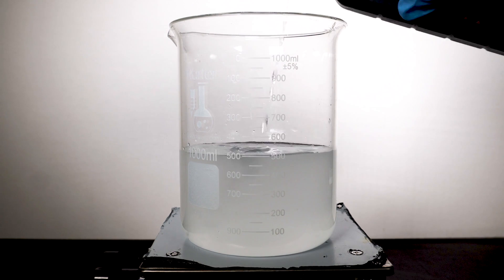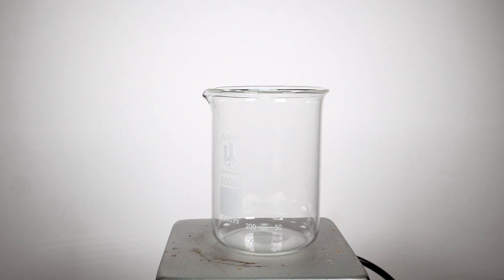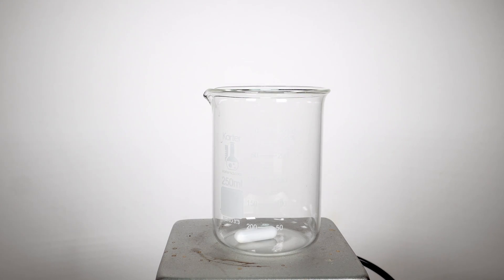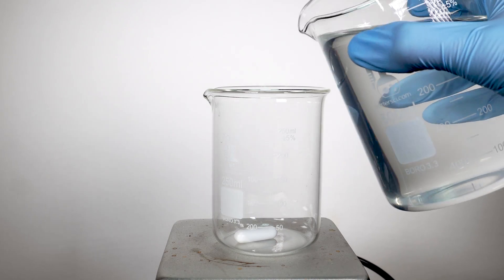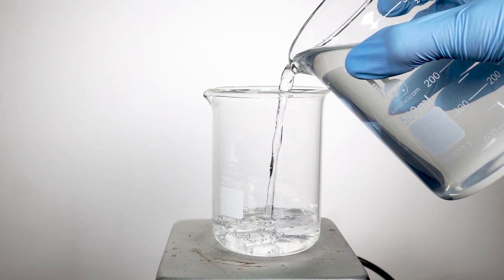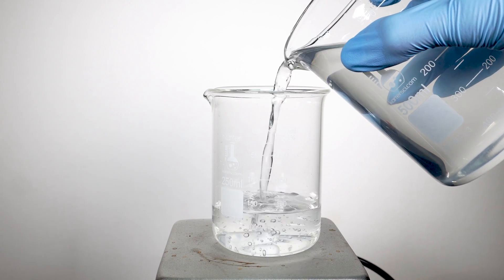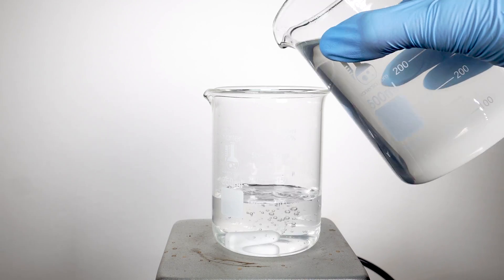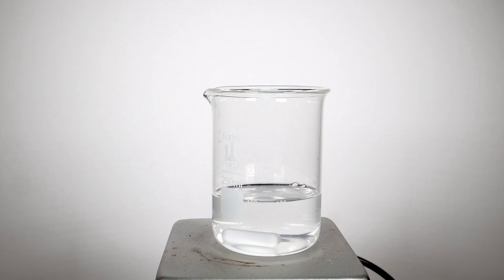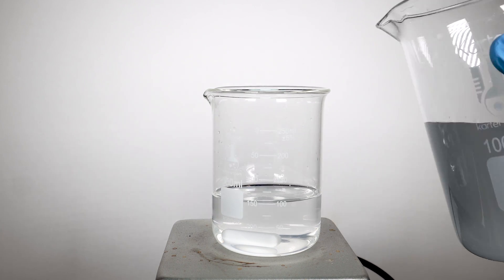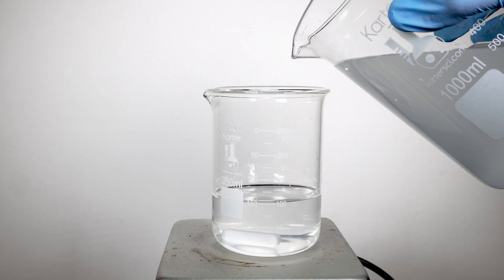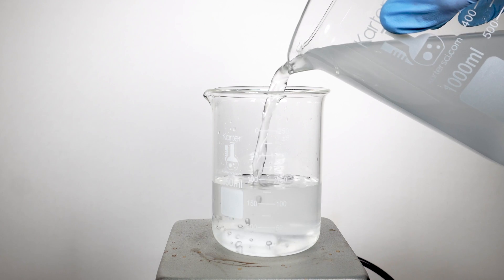For the clock reaction to work best, we have to add in equal parts of solution A and solution B into a beaker and mix them together. The time for the solution to change can be determined by measuring the reaction rate. For this specific composition of compounds, it takes anywhere from 45 seconds to 50 seconds to change color. While we wait, let's talk a little bit about what's going on here.